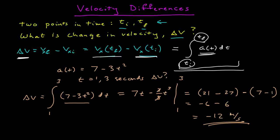So with this acceleration, there is a change in velocity of negative 12 meters per second between t equals 1 and t equals 3 seconds.